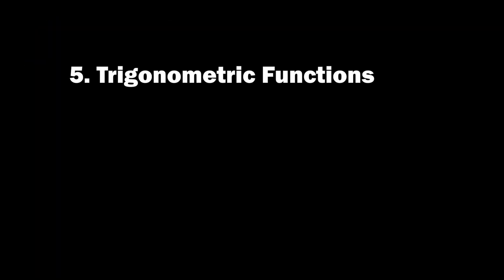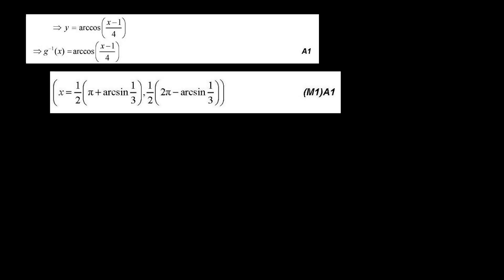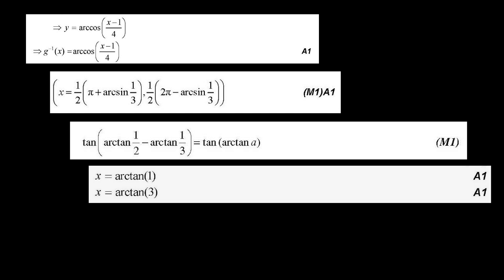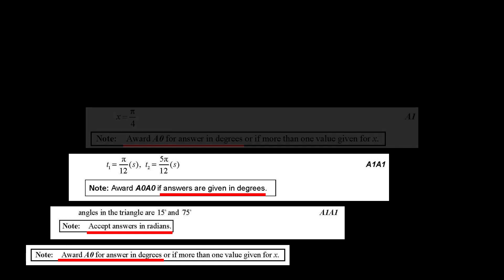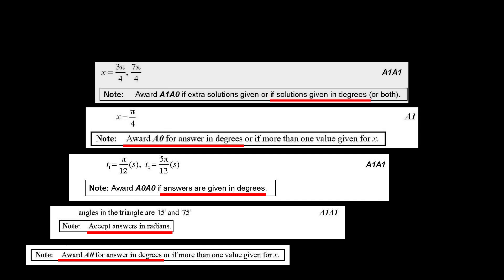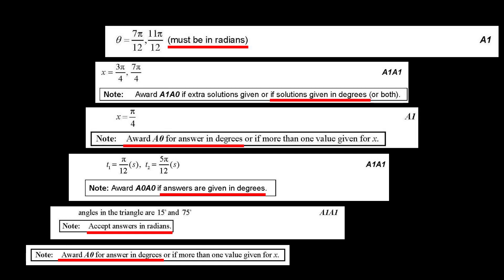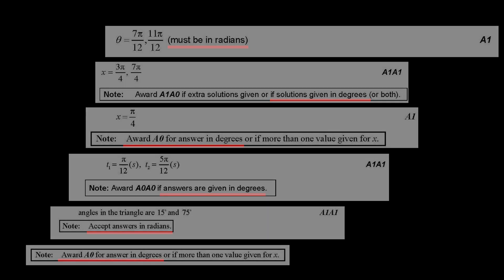Number five, trigonometric functions. When working with the inverse trig functions, it is important to note that different countries or textbooks may use varying notations. However, IB students must use the notations arcsine x, arccosine x, and arctangent x without exception. In case the question specifies the answer should be in degrees, the answer should be given in degrees. Similarly, if it specifies radians, the answer should be given in radians.